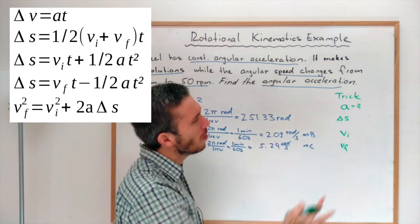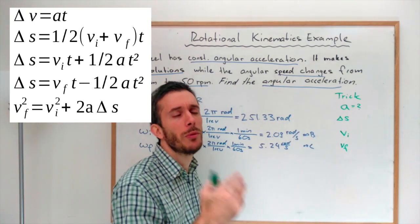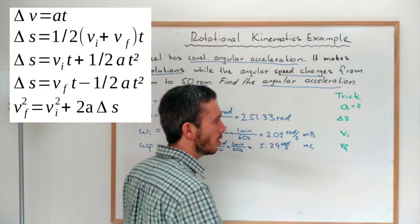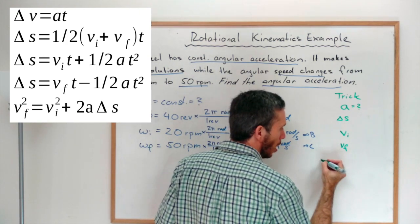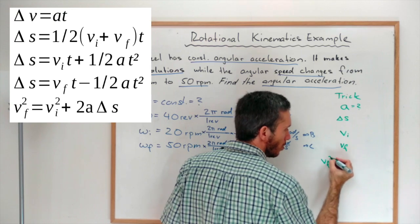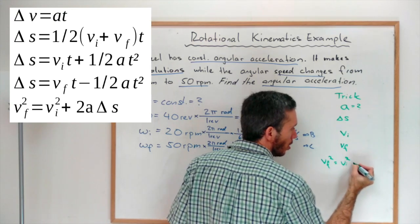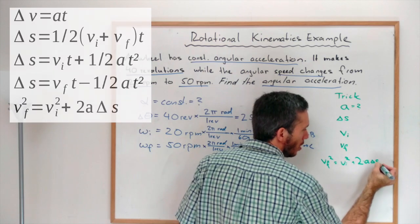Now here we don't know anything about time, which kind of eliminates four out of the five constant acceleration equations. The only one that doesn't have time in there is V final squared is V initial squared plus 2 times A times delta S.